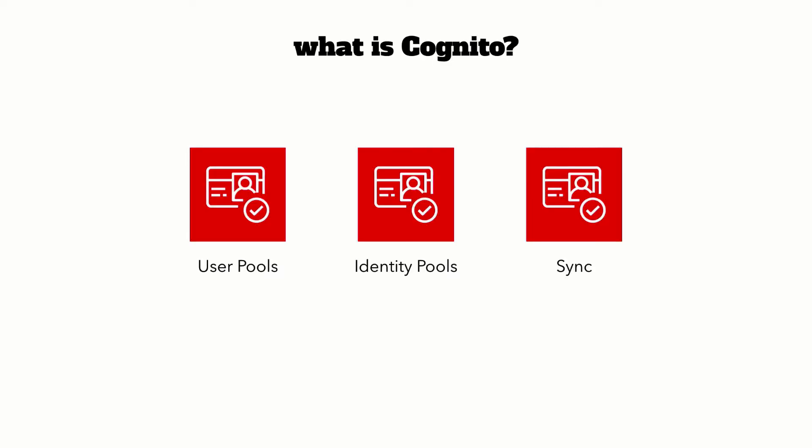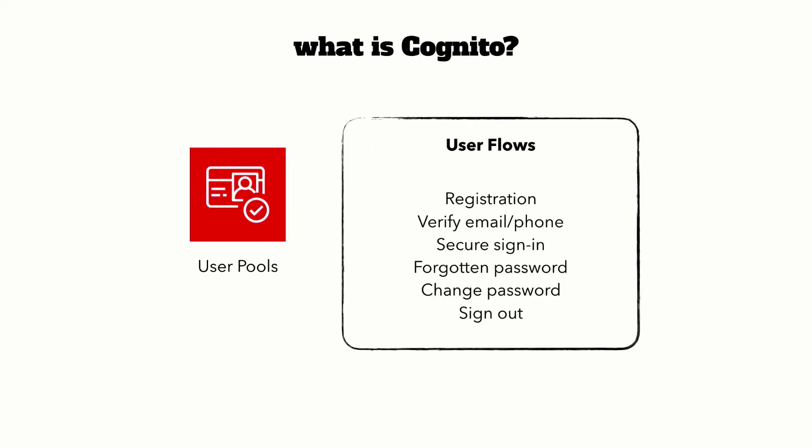In this lesson, let's give you a brief introduction to Cognito. You can think of Cognito as a service with three distinct feature sets. There's the Cognito user pool, which is a managed identity service that manages everything related to user sign up and sign in. It implements the common user flows: